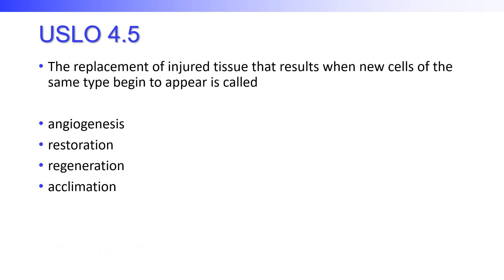The replacement of injured tissue that results when new cells of the same type begin to appear — is that angiogenesis, restoration, regeneration, or acclimation? Acclimation means becoming used to something, and angiogenesis is blood vessel regeneration. So the choices narrow to restoration or regeneration, and the correct answer is regeneration — because we're regrowing those same cells.